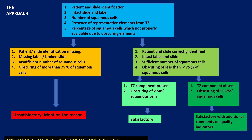This is a kind of algorithm I have put together. The key factors, shown in blue, are: proper patient and slide identification, whether the slide is intact and the label is properly visible, the number of squamous cells, the presence of representative elements from the transformation zone, and the percentage of squamous cells not properly evaluable due to obscuring elements. These are the five major factors taken into account.